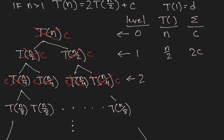At level 2, we're representing t of n over 4, but I'm going to write that as t of n over 2 squared.